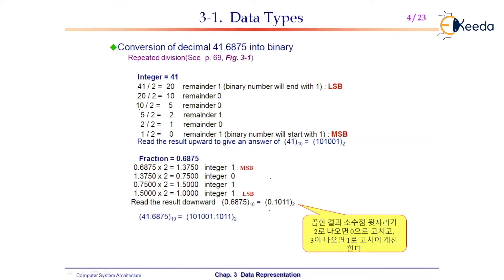For the fractional part after the decimal point, the conversion is even simpler — you just multiply that fractional value by 2.